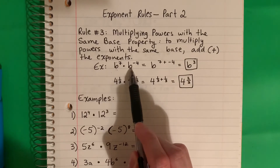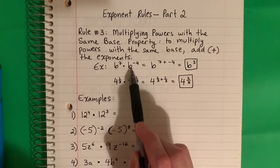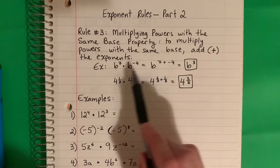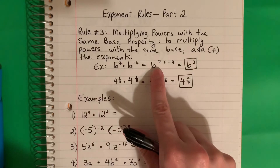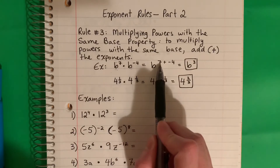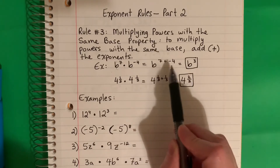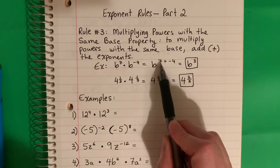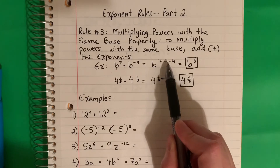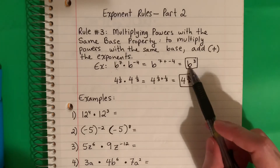If I have the same base and it's multiplication — si tengo los mismos bases y es multiplicación — I'm going to copy the base and then add the exponents, más. So I'm going to do 7 plus negative 4. That's 7 minus 4, which is 3. So my answer is B cubed.